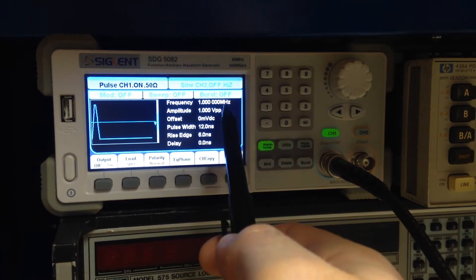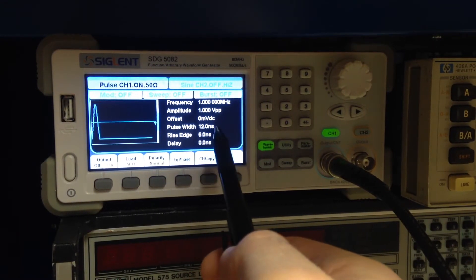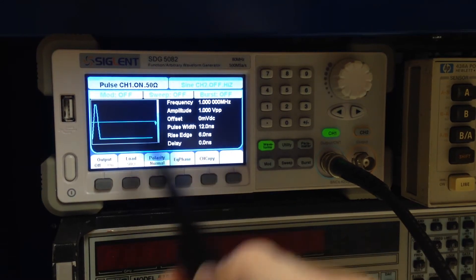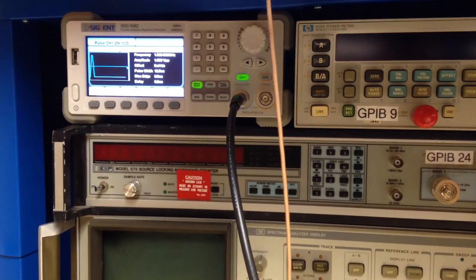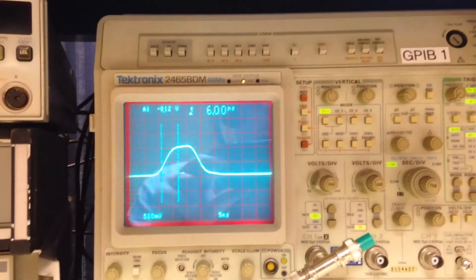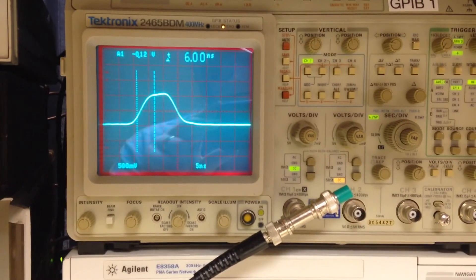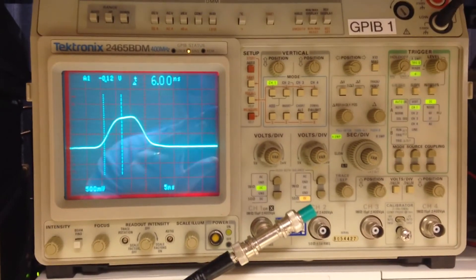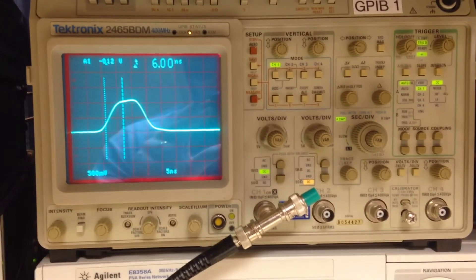You can see I've got it set to 1 megahertz rate with a 1 volt peak-to-peak and then a minimum pulse width of 12 nanoseconds, which is a 6 nanosecond rising and falling edge. And internally, the load is set to 50 ohms. Coming out of the signal generator here, you can follow the coaxial cable. It goes over to my Tektronix 2465 BDM scope. This is a 400 megahertz bandwidth scope. This is made in the early 90s. It's about the highest bandwidth analog scope that Tektronix made before they switched to sampling scope. So it's really nice.